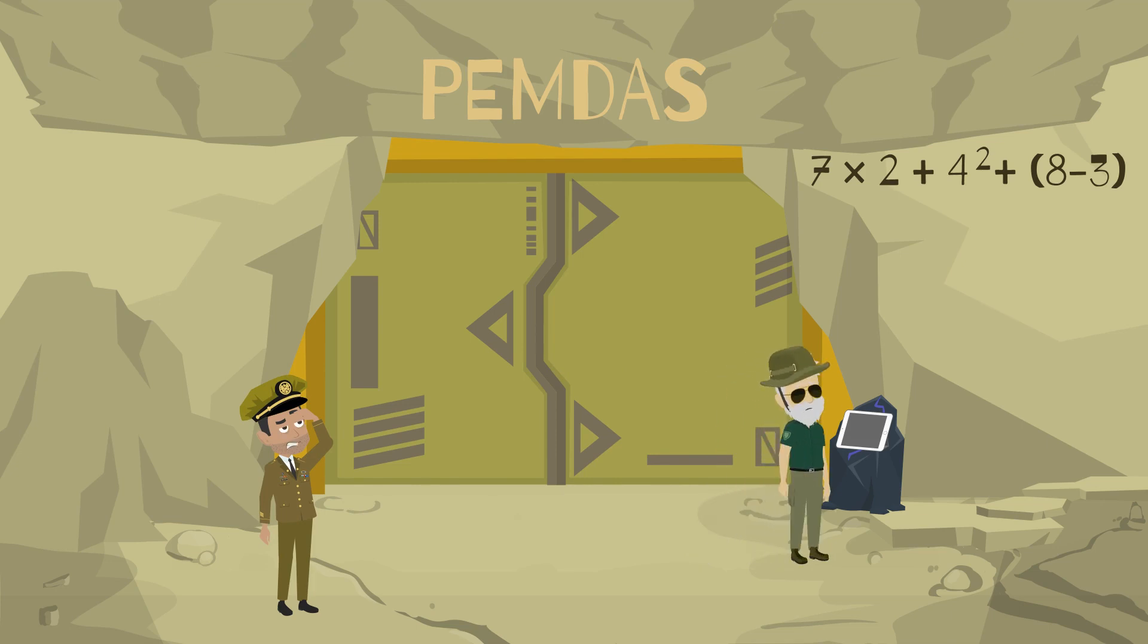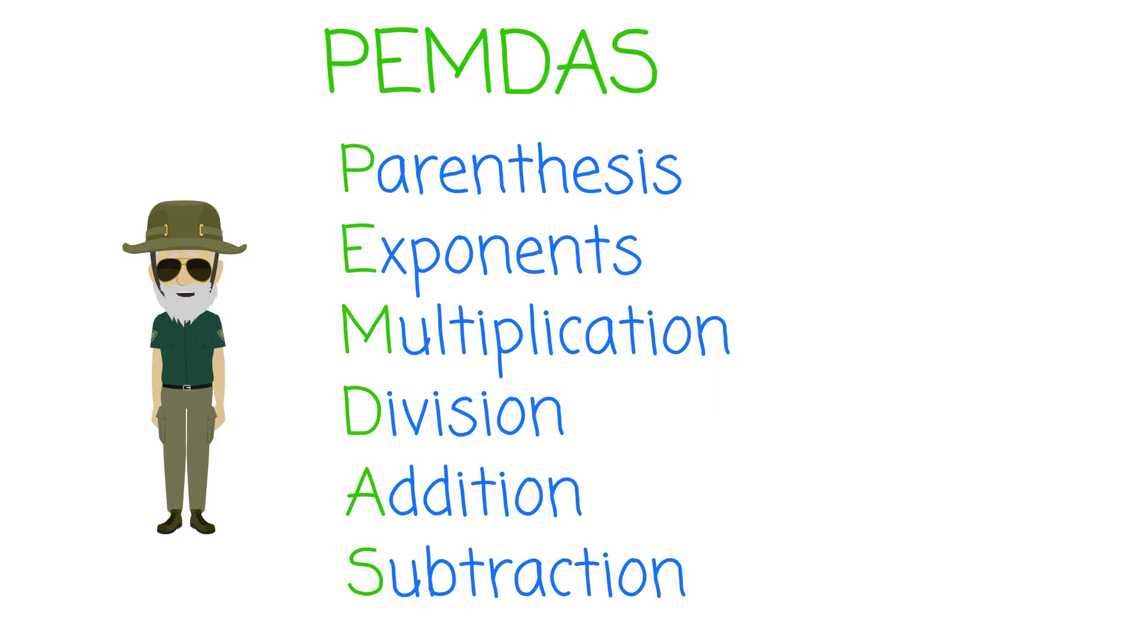The order of operations is in place to make sure everyone solves the problem following the same steps to arrive at the correct answer. If the problem is solved out of order, you could get a completely different answer. The problems should be solved from left to right as you would read a sentence, with the first thing to solve being anything inside parentheses.